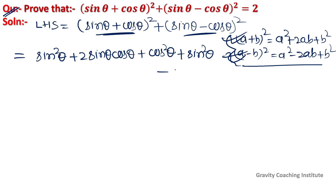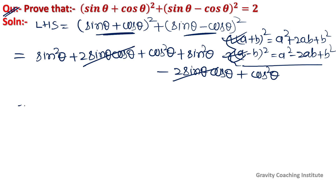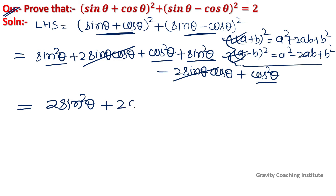...applying the second formula: sin²θ - 2 sinθ cosθ + cos²θ. The middle terms (+2 sinθ cosθ and -2 sinθ cosθ) cancel out. Adding the remaining terms: sin²θ + sin²θ = 2 sin²θ, and cos²θ + cos²θ = 2 cos²θ. Taking 2 as common factor gives 2(sin²θ + cos²θ).